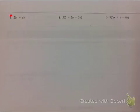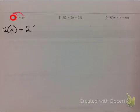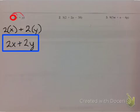For number 1, we are going to be distributing that 2 and it goes to both terms. So we're going to get 2 times x plus 2 times y. And 2 times x, we just say 2x plus 2y. That's it.